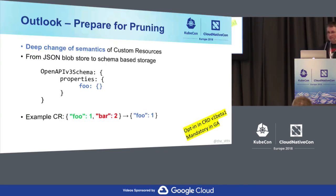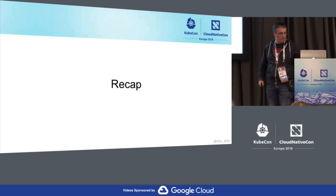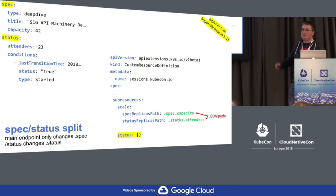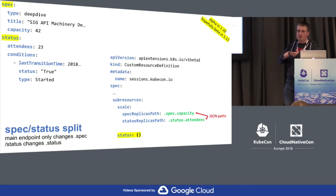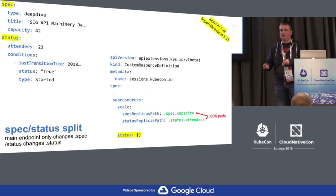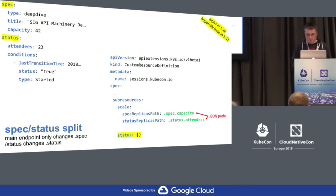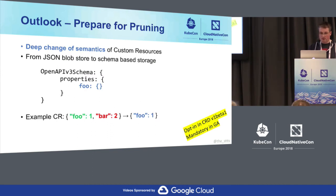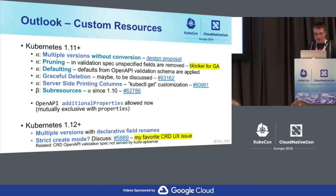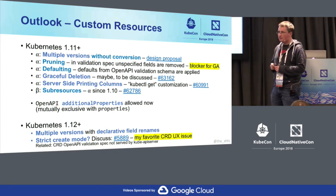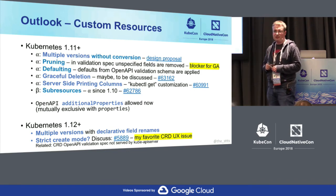Recap: we want to have features like validation, sub-resources, defaulting, pruning, and so on, per version. In v1alpha1 maybe you have no status split, but in v1 you want it. Be prepared — you might need validation at some point. We've seen the features already. I put some links there if you want to follow up the discussion — certain things are new and not really decided, so jump on those links and add your thoughts.